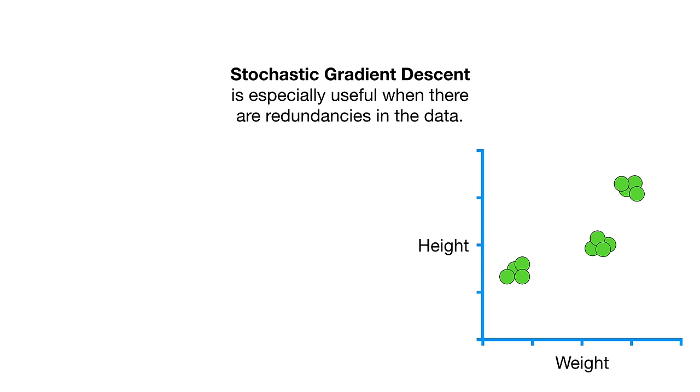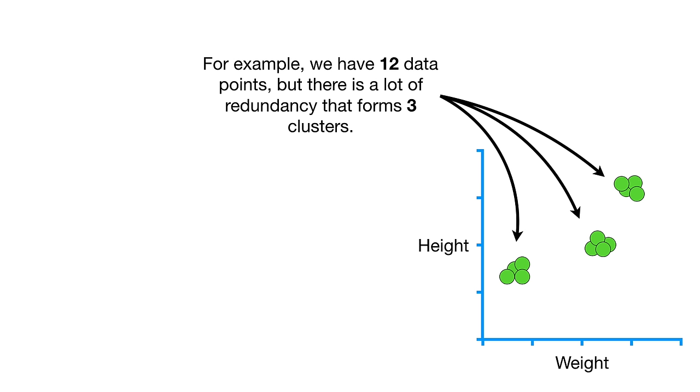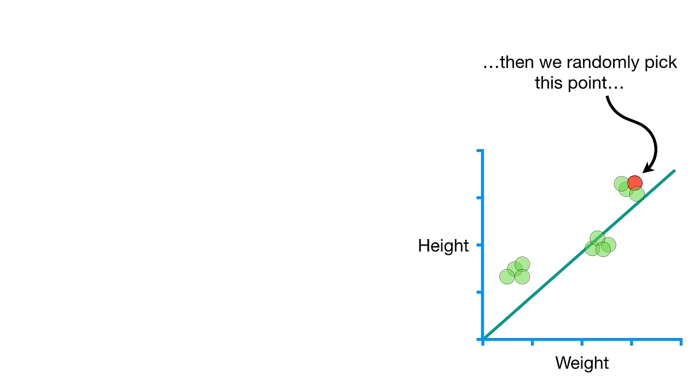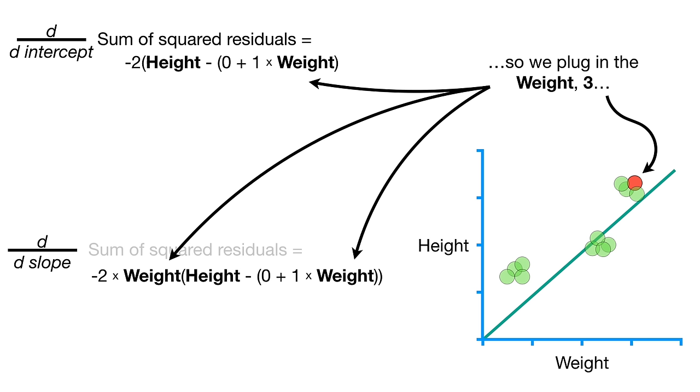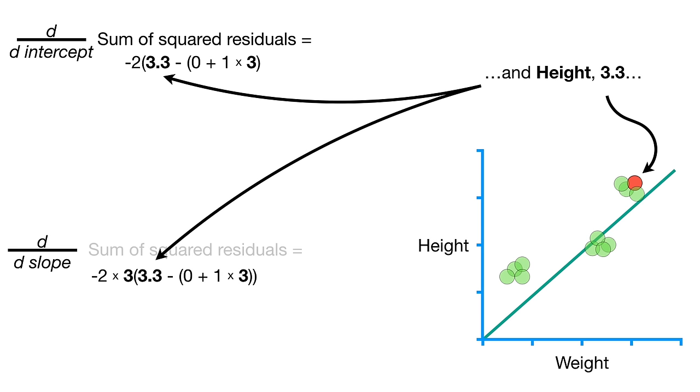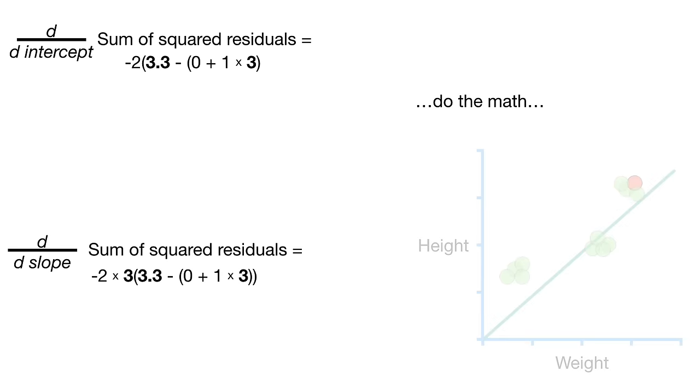Going back to our super simple example, stochastic gradient descent would randomly pick one sample for each step and just use that one sample to calculate the derivatives. Thus, in this super simple example, stochastic gradient descent reduced the number of terms computed by a factor of 3. If we had 1 million samples, then stochastic gradient descent would reduce the amount of terms computed by a factor of 1 million. So that's pretty cool.